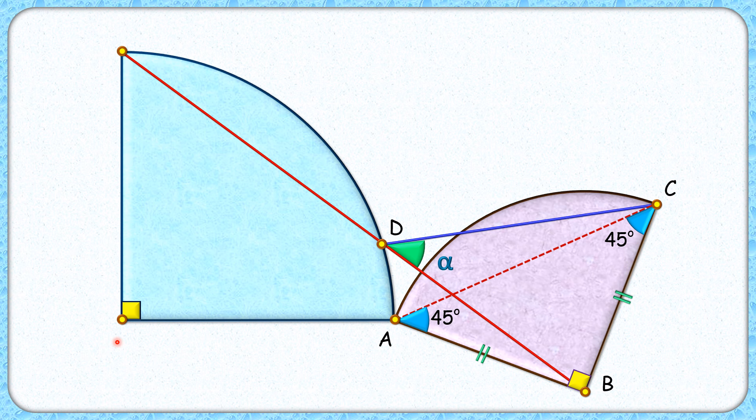How about this angle here? This angle at the center is 270 degrees. By theorem, if the angle subtended at the center is 270, then the angle subtended at the remaining part of the sector will be 135 degrees.